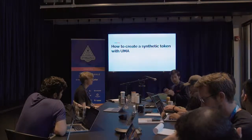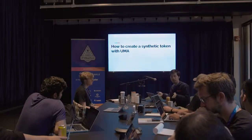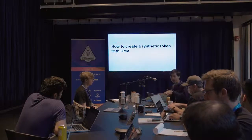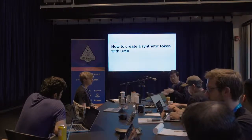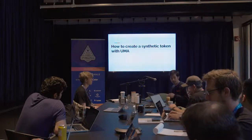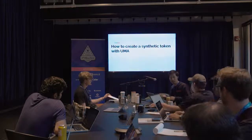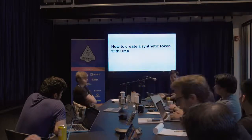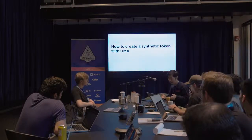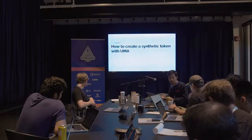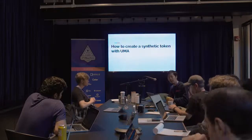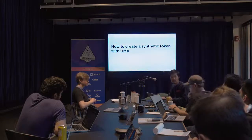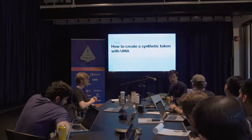Originally I was going to have this be a workshop-style talk where I would go through the actual process. But one of my colleagues updated the README, and it's pretty comprehensive in terms of how to start up one of our smart contracts, how to deploy it on a testnet, and how to interact with it through our DApp. So instead I wanted to focus more on high-level what we're doing, why we're doing it, and the mechanics of the derivative.